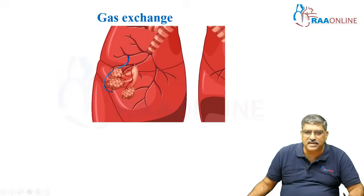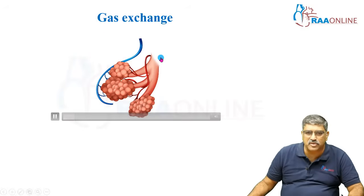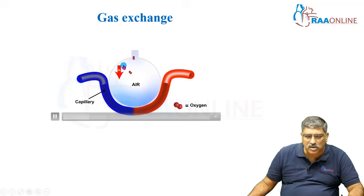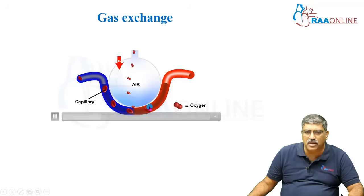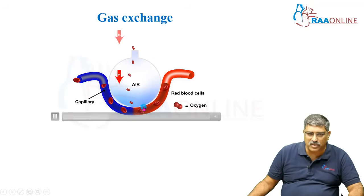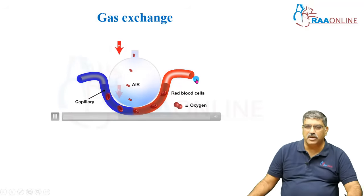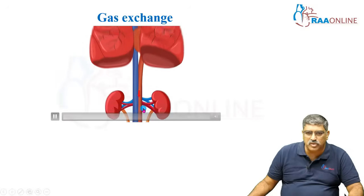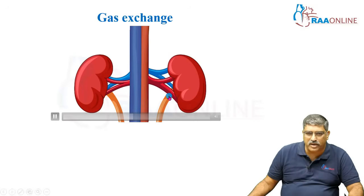Coming to the gas exchange, the gas comes to the alveoli and gas exchange happens between the alveoli and the pulmonary capillary. Oxygen comes in and is carried by the hemoglobin to the organs. You can see the oxygen being carried by the hemoglobin and the oxygen goes to the organ system where it is utilized.